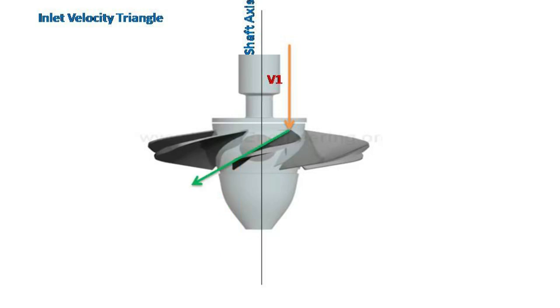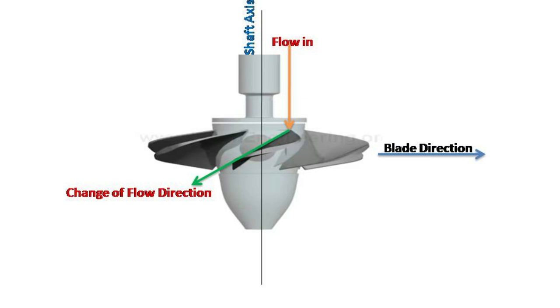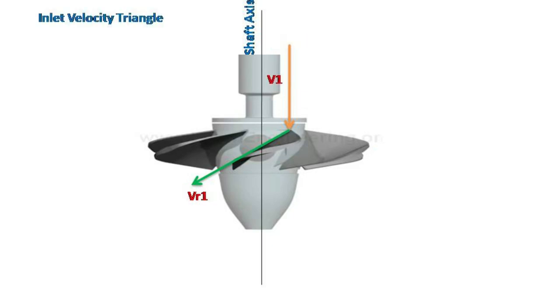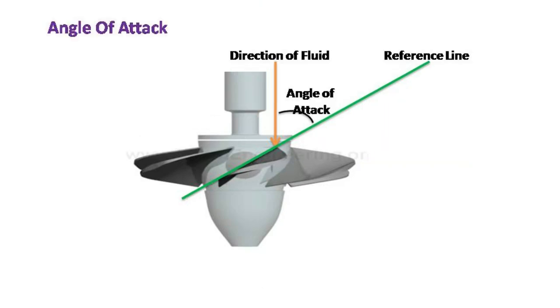Fluid hits the blade and its direction changes over the blade. The velocity with respect to blade is called relative velocity and it must be at an optimum angle of attack in all directions or all cross sections. Angle of attack is the angle between the reference line of a blade and flow direction.